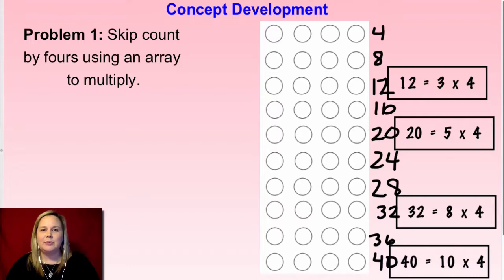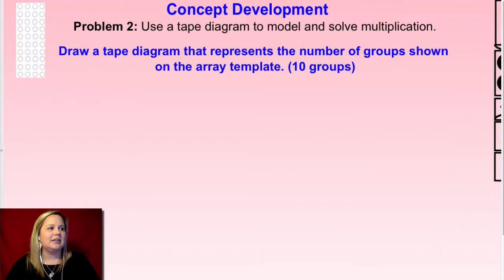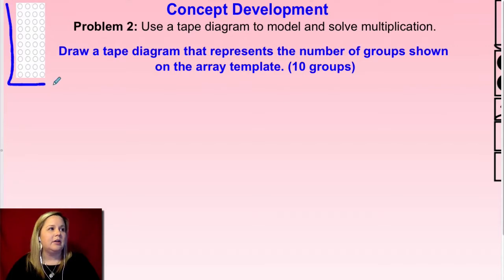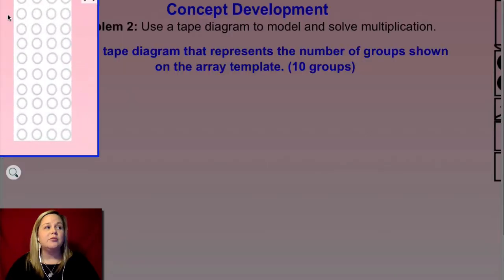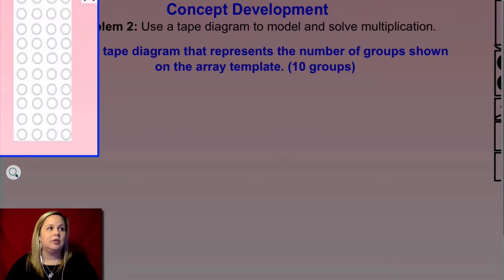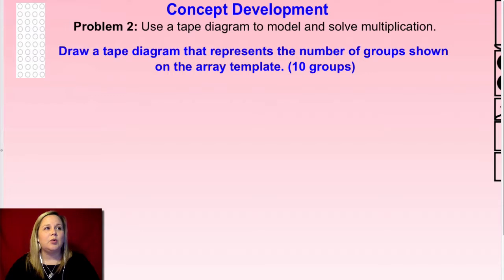That's a good way to practice skip counting by fours and analyzing the array. Let's jump in and take a look at another problem using this array model we just talked about. Notice in this one there were ten rows and there were four in each row.